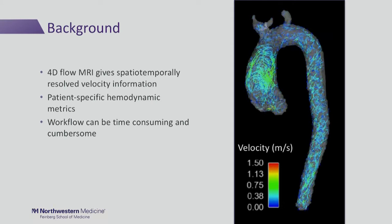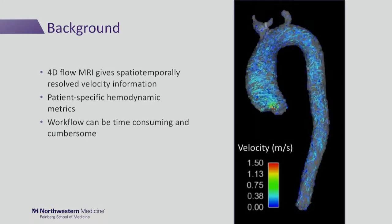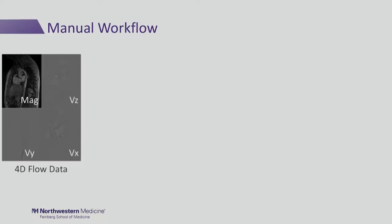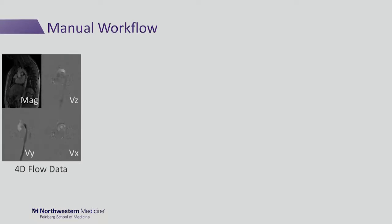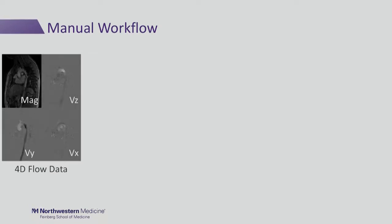Here's an example of what our data can look like after we do our pre-processing and segmentation. To quickly review the workflow that we typically go through, we start with our data from the scanner, and we have a magnitude as well as three velocity directions. This shows just one slice that's temporally resolved.